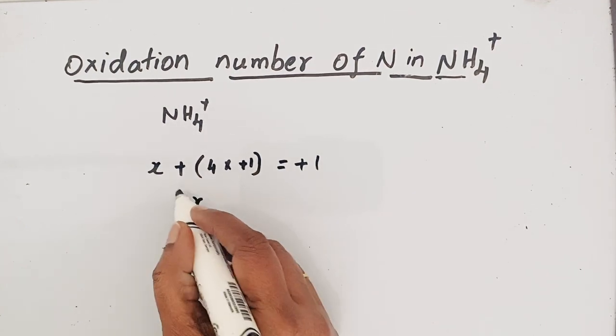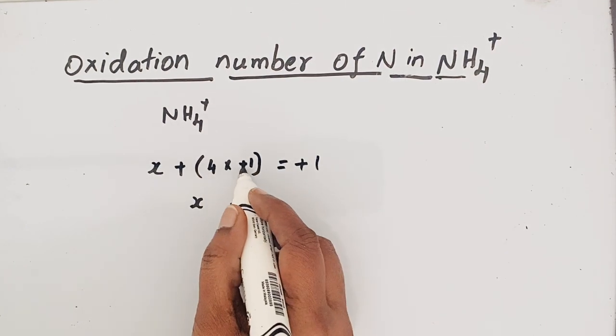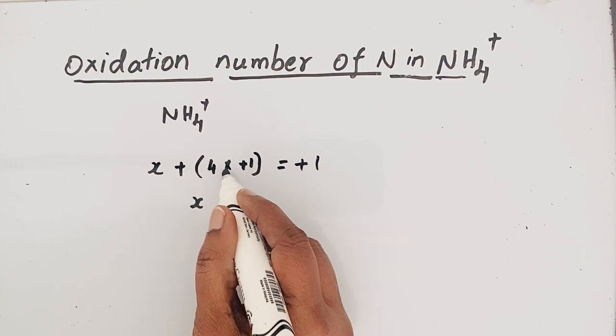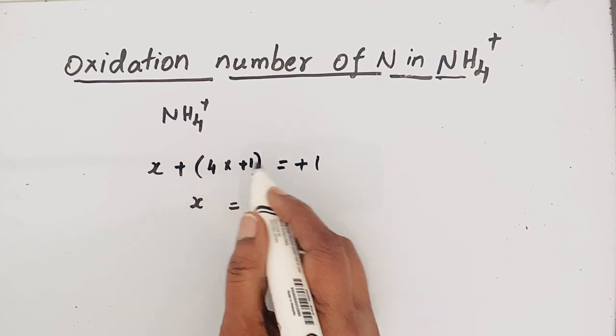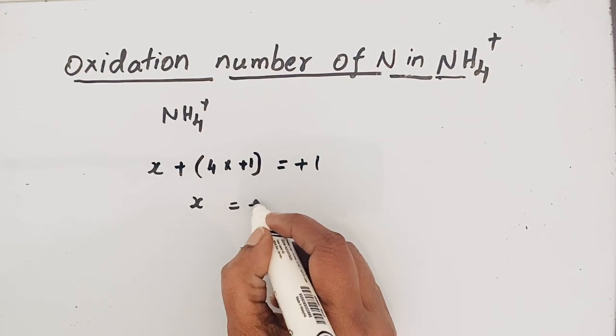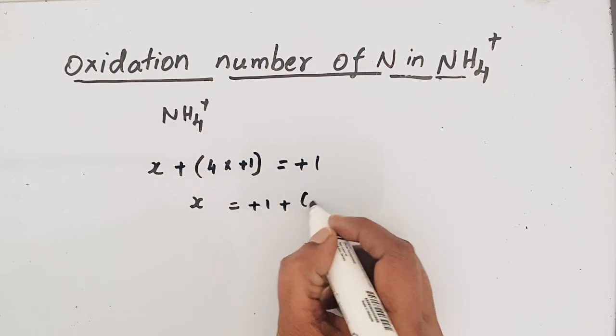So x, we keep it here, and that 4 times +1 is +4. When we bring it to the other side, it will become -4, so +1 + (-4).